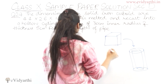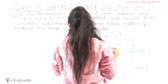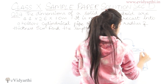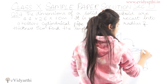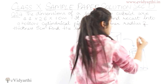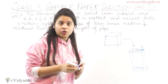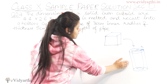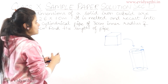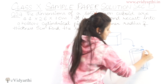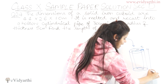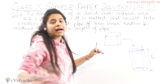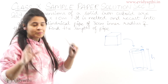The inner radius is given as 30 cm and the thickness is 5 cm. If we look at the cylindrical pipe, we have to find the height — we will see how much the height of the pipe will be.